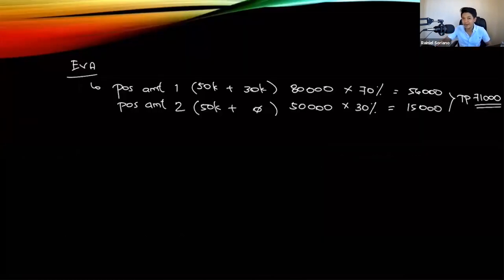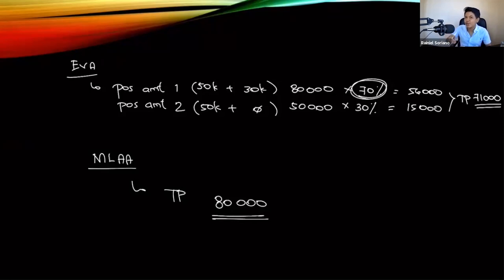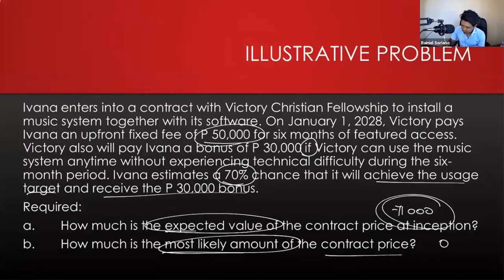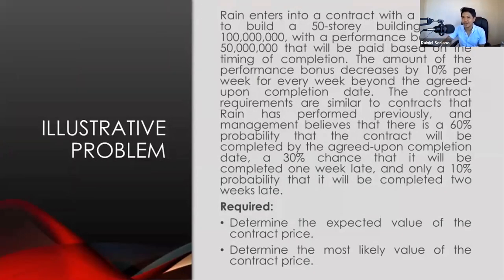Under the most likely amount approach, the transaction price equals the possible amount with the greatest chance of occurrence. That is 70%, corresponding to the 80,000 pesos amount. A common mistake is multiplying 70% by 80,000 — do not do that. We only use the percentages to determine which possible amount has the greatest chance of occurrence. Under the most likely amount approach, the transaction price is 80,000 pesos.